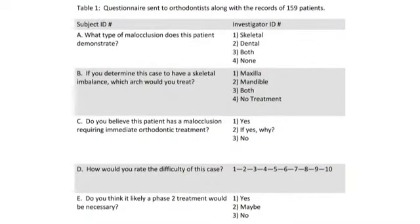Along with the records, we sent a questionnaire to be completed for each patient. The questionnaire included questions aimed at pinpointing the etiology of the Class 2 malocclusion, such as if it was a skeletal or dental problem, and which jaw was at fault.